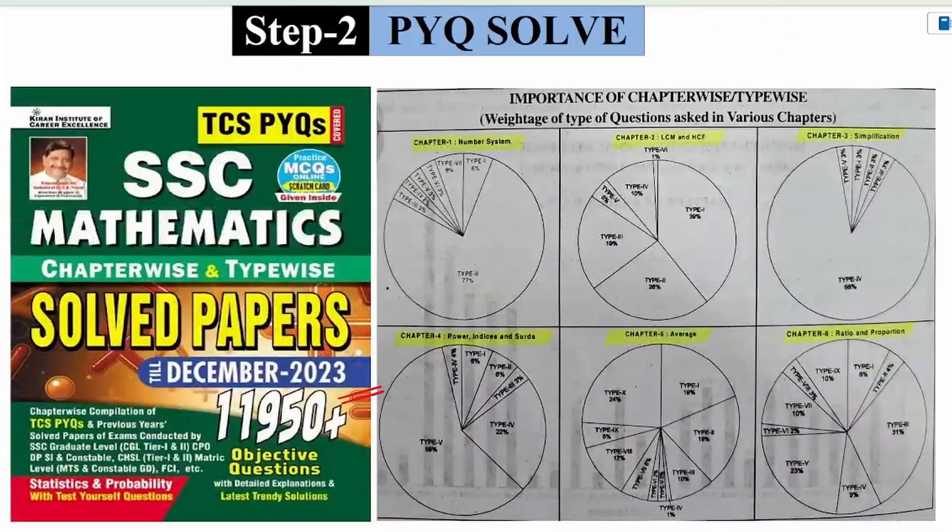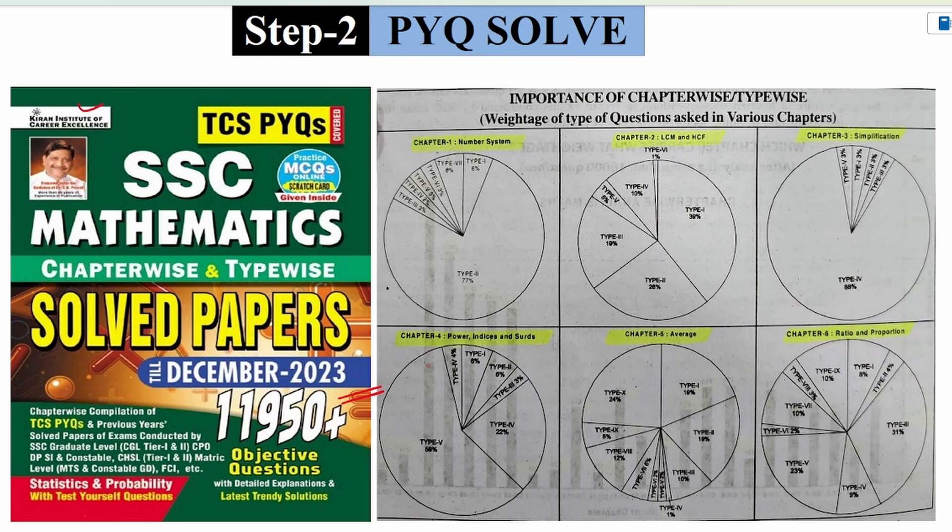So solving previous year question is step two of the strategy. This is the book that you can refer to. And also you can refer the charts given here. This will tell you what has been the weightage of which chapter. So that if you are a beginner, you can learn which chapters to focus on. So you complete your course, whatever videos you are watching for that particular chapter, and then come back to this book to finish the previous year questions and practice them multiple times.